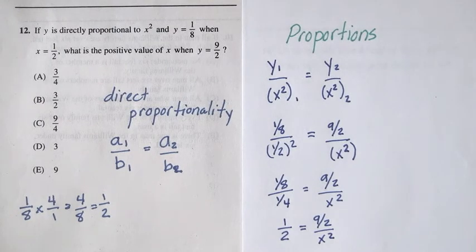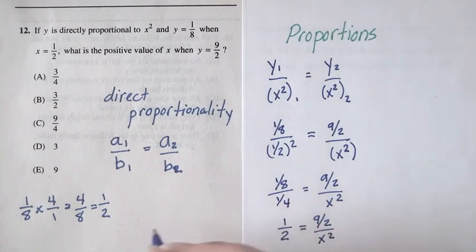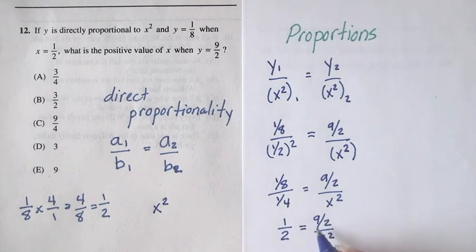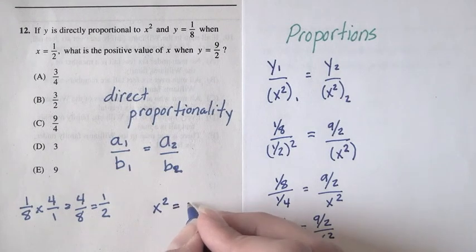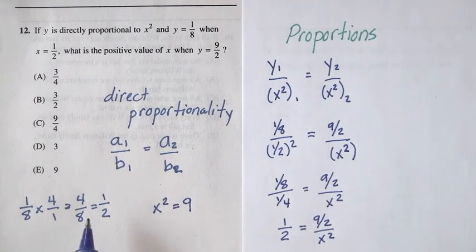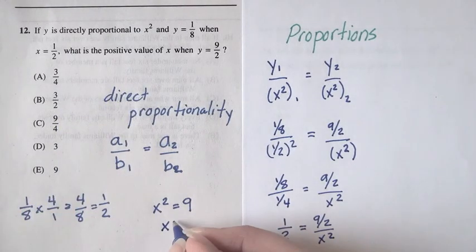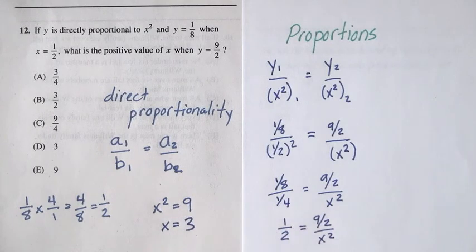Now we can cross multiply and solve. One times x squared is just x squared, and nine-halves times 2 is just 9. x squared equals 9, and because we know x is positive, that means we want the positive square root of 9. x is equal to 3.